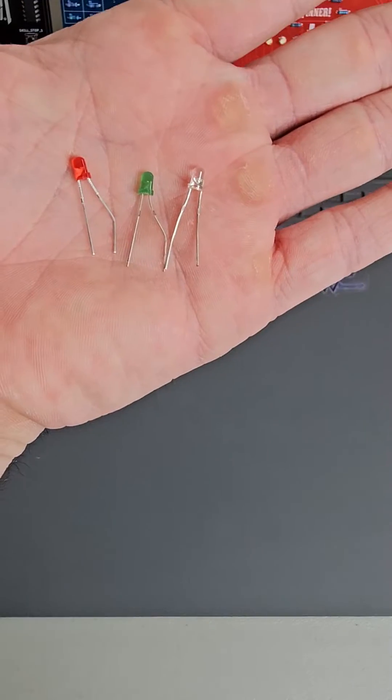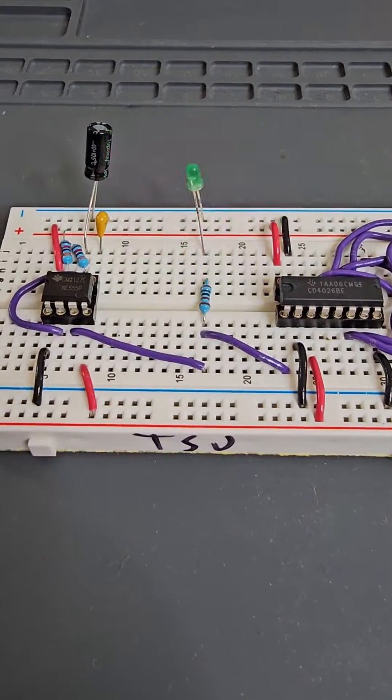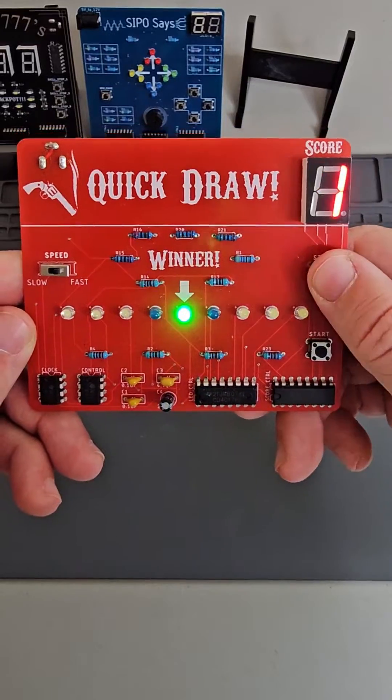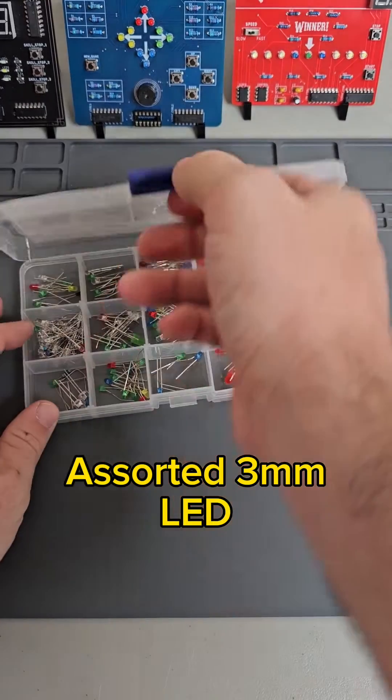Next we'll need some LEDs. LED stands for light emitting diode. LEDs are used for status indicators, games, and lighting. I highly recommend getting an assorted pack of 3 millimeter LEDs.